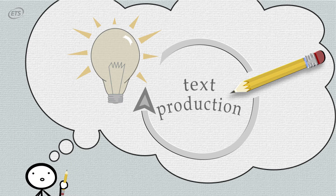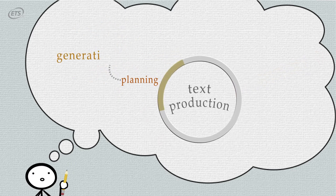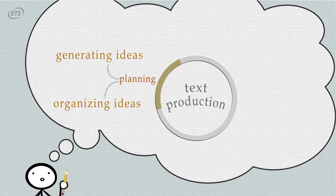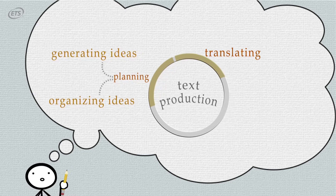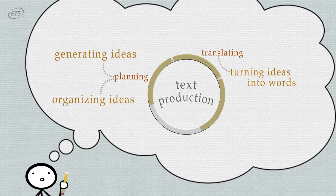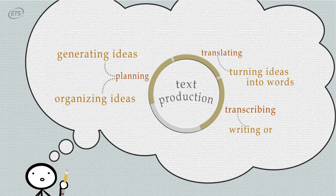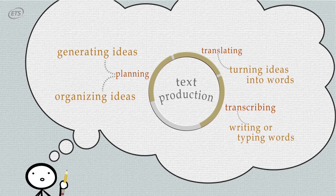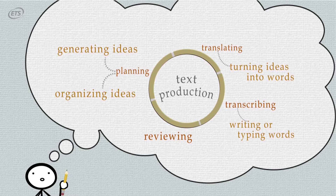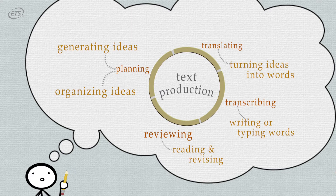Text production involves at least four essential sub-processes for writing. Planning, which refers to generating and organizing ideas. Translating, which is turning ideas into words. Transcribing, which is putting words on a paper or typing words on a computer. Finally, there's reviewing, which is reading and revising the text and the plan of the text.